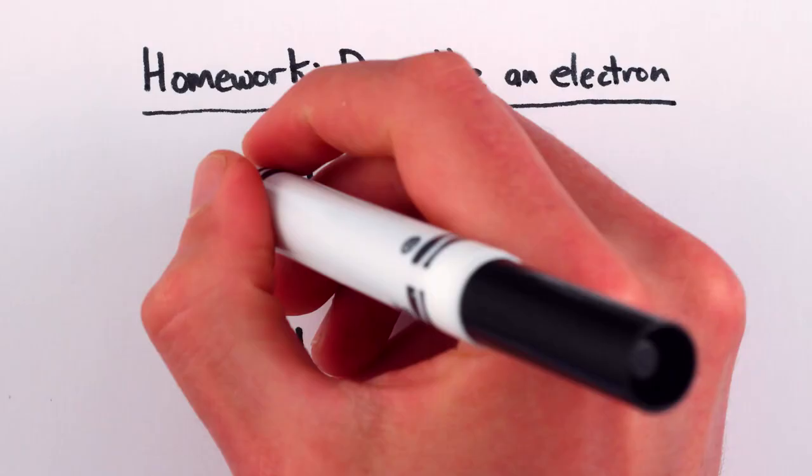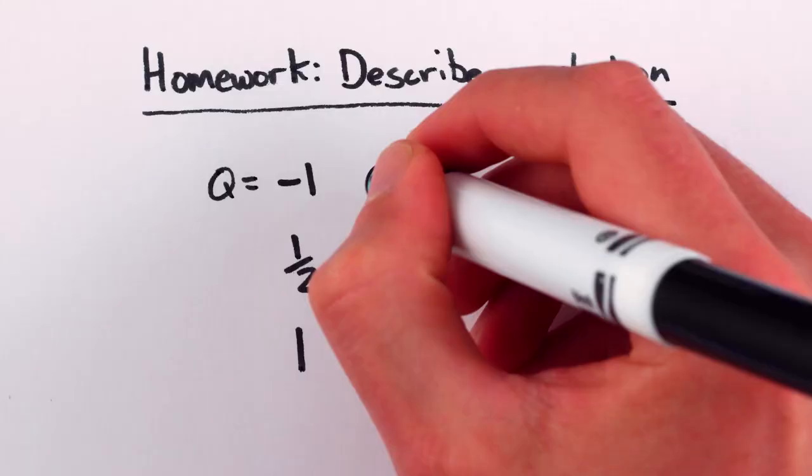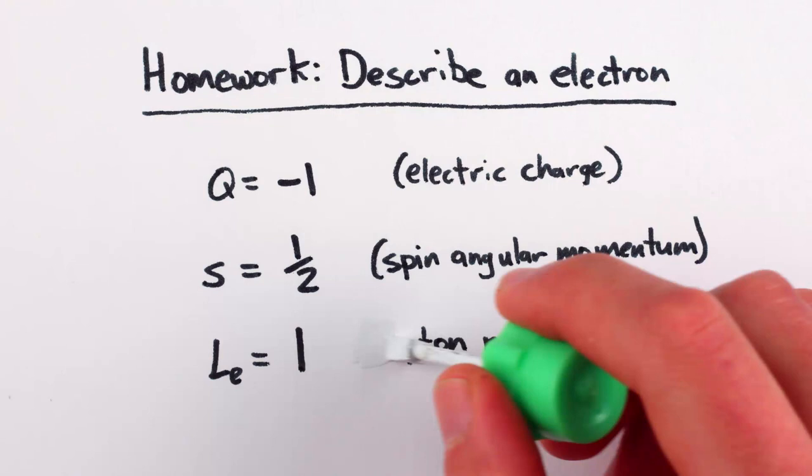We physicists call these properties electric charge, spin, and lepton number. But the electron doesn't care what we call them. The fundamental properties that an electron has are just numbers, mathematical properties.